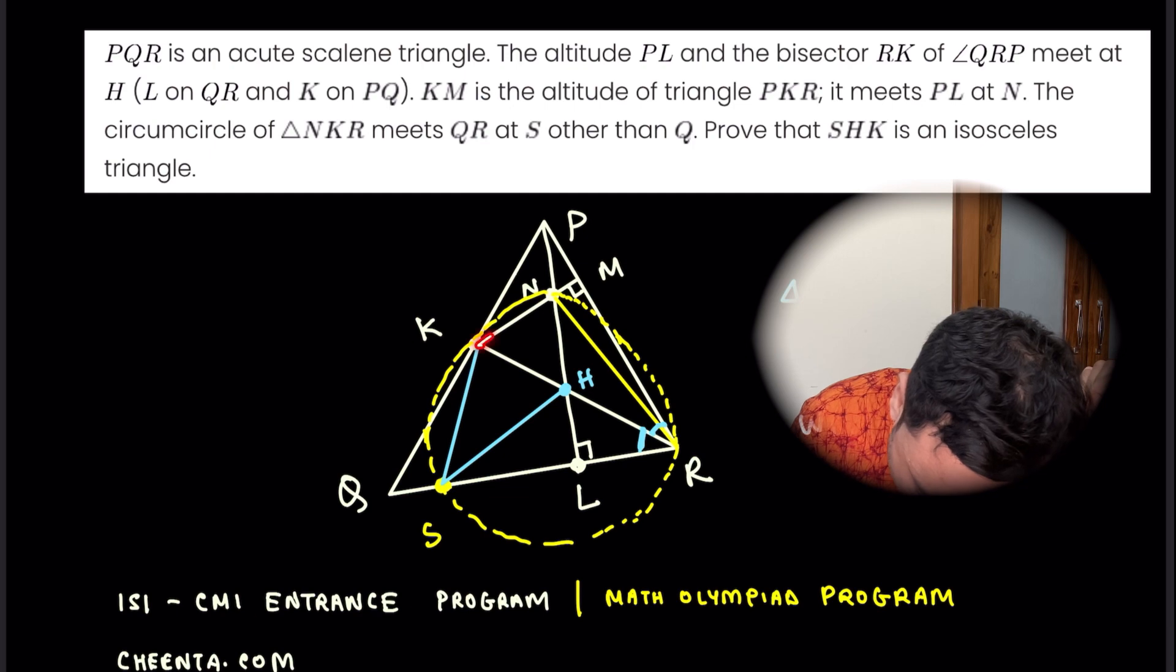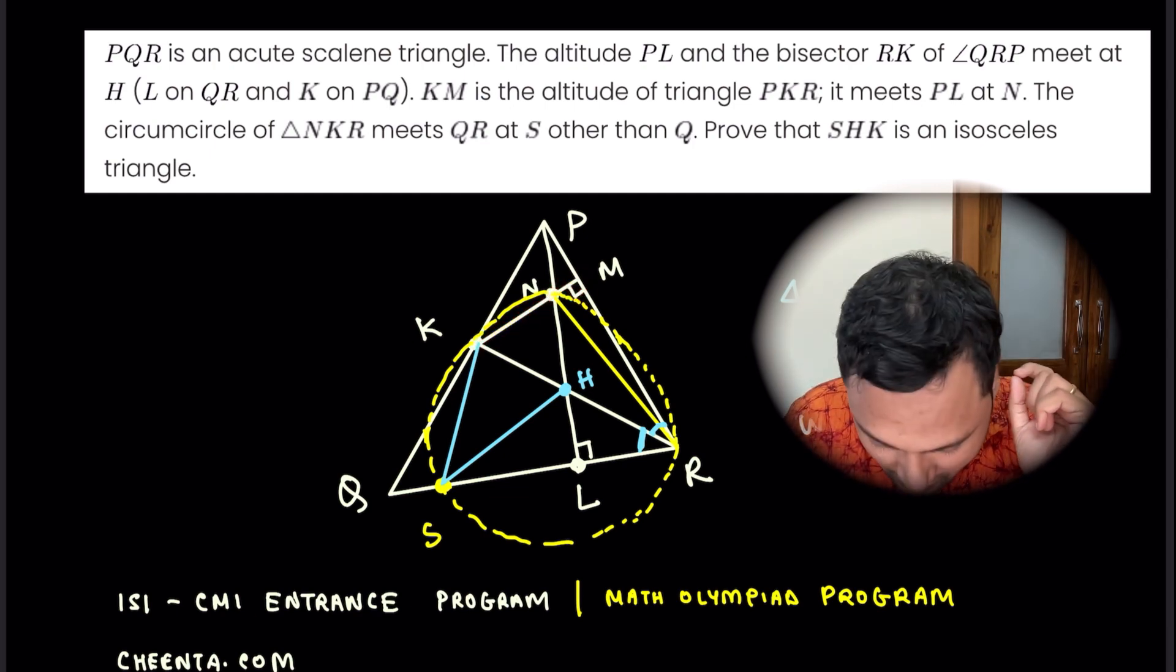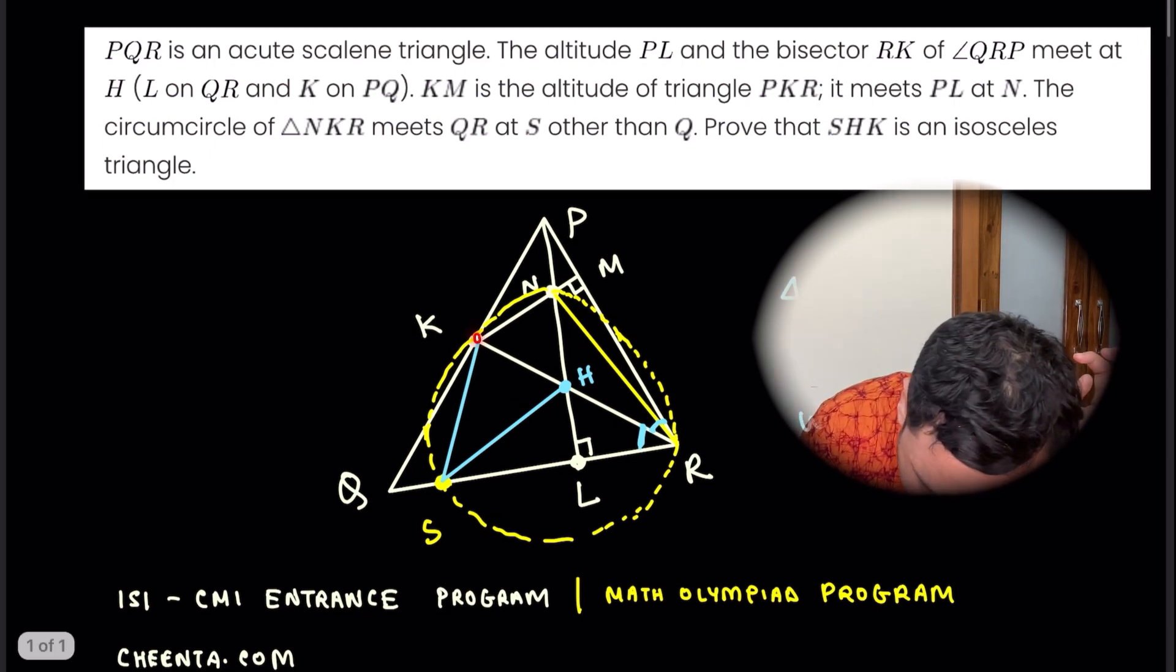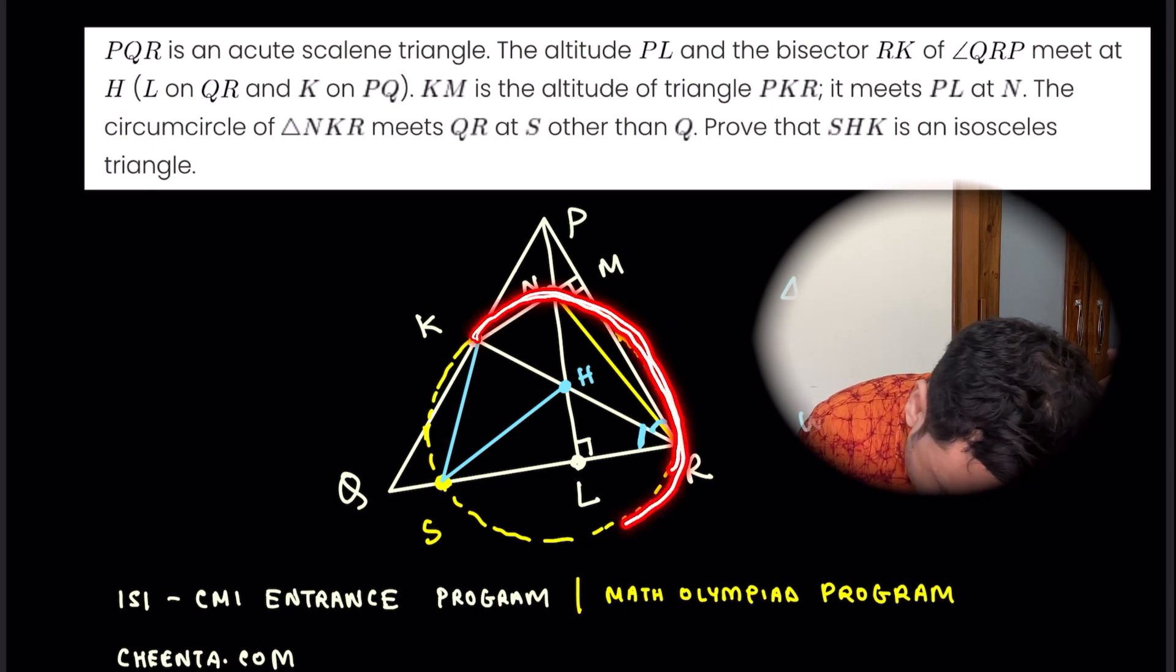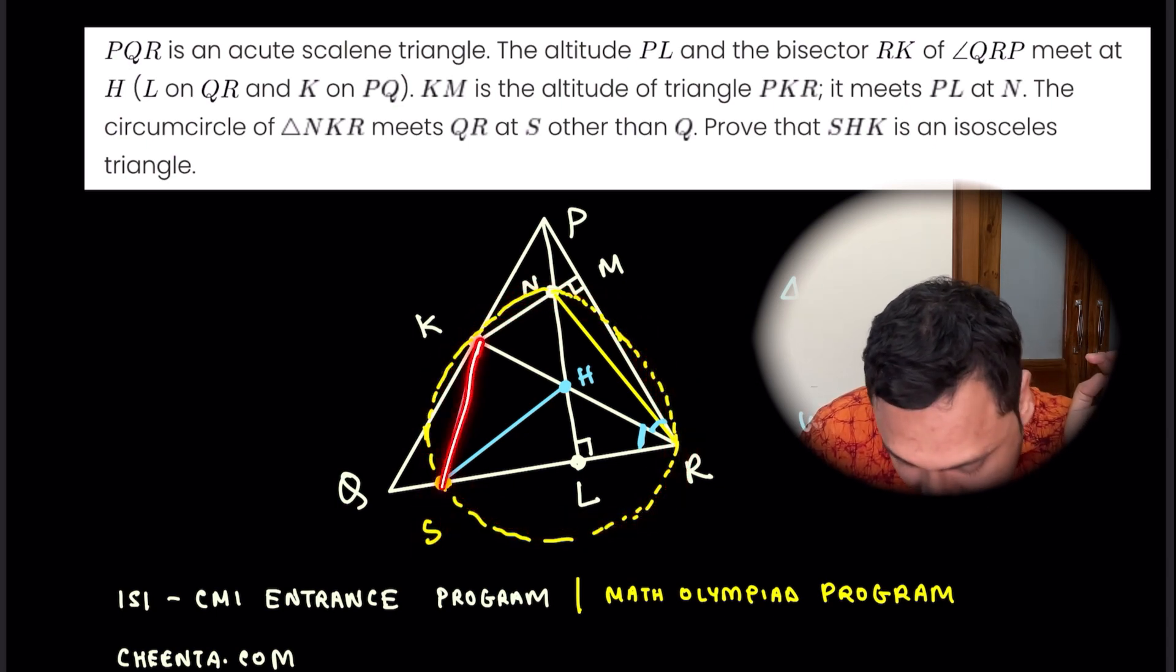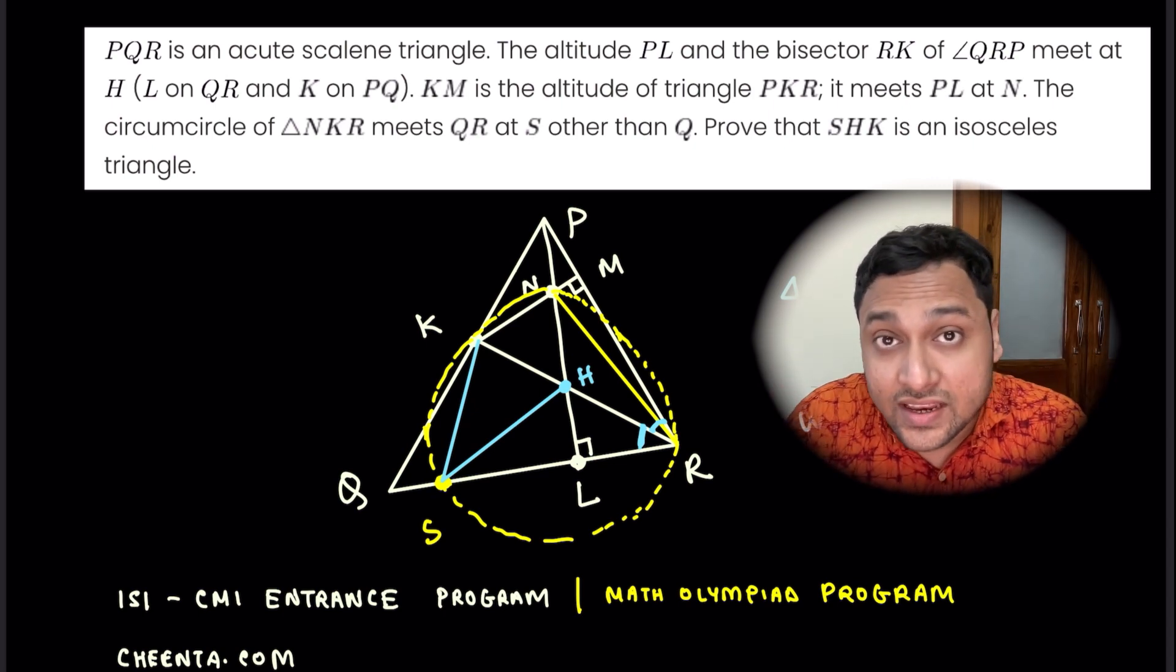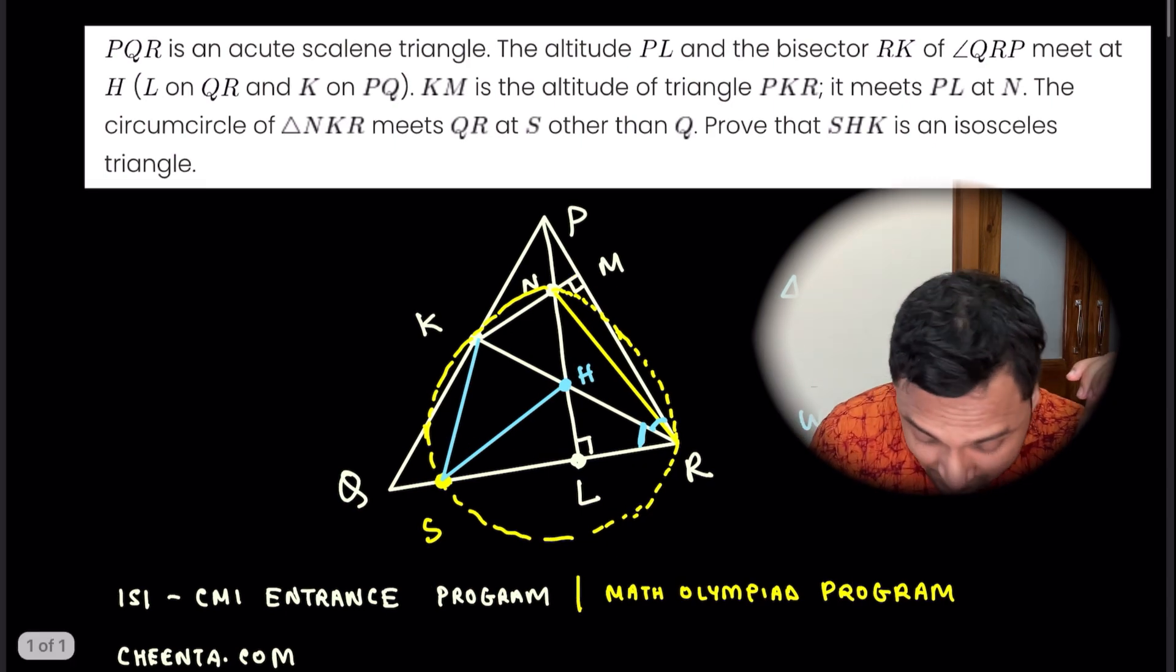And K to M is the perpendicular. And we draw the circumcircle of NKR, which cuts QR again at S. We have joined SK and SH. We want to ensure that triangle SHK is isosceles. How are we going to do this?